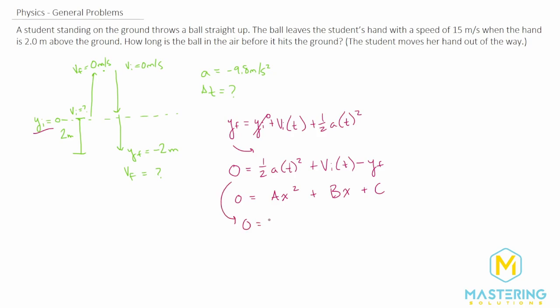We have zero equals one half times acceleration, which in this case is gravity. So we have negative 9.8 meters per second squared times t squared, plus the initial velocity. They tell us in the problem it is 15 meters per second. So the initial velocity is 15 meters per second, and that's multiplied by t.